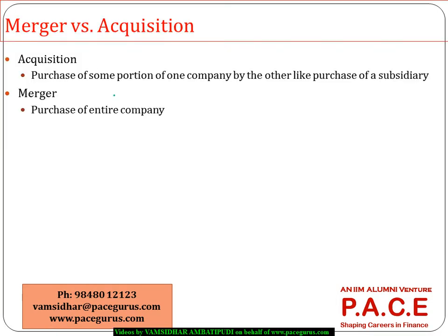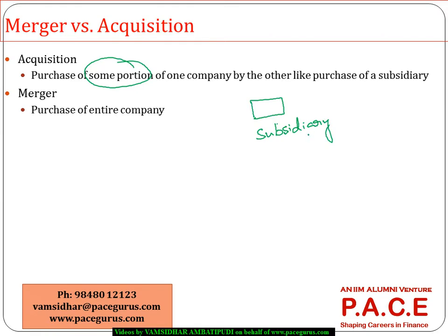There is a difference between a merger and an acquisition. Whenever I am trying to purchase some portion of a company — not the entire company — such as one business unit, one subsidiary, one branch, or some specified assets, that is called an acquisition. Whereas when the target is the entire company, we call it a merger.